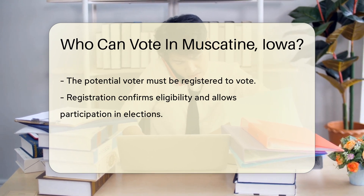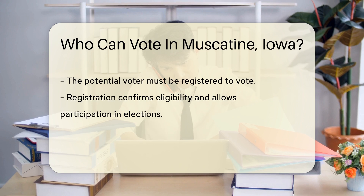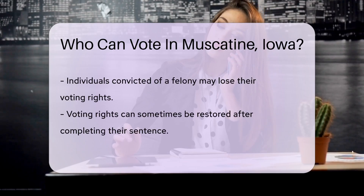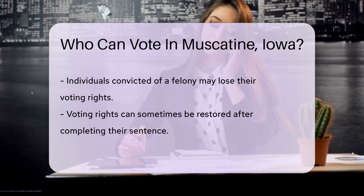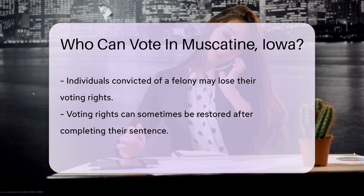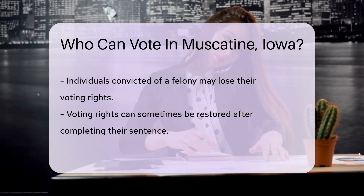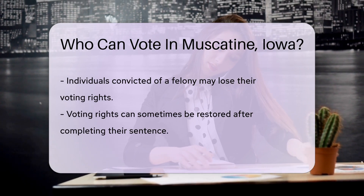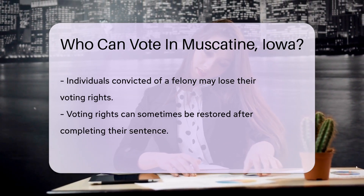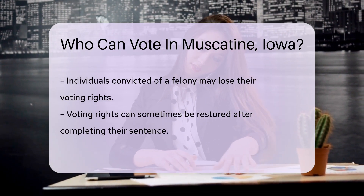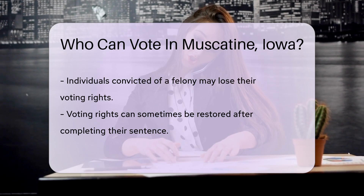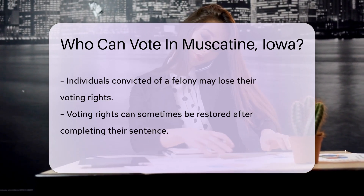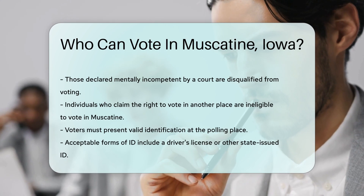It is important to note that some individuals are disqualified from voting. Those convicted of a felony may lose their voting rights; however, rights can sometimes be restored after completing their sentence. Another disqualifying factor is being declared mentally incompetent by a court — such individuals are prohibited from voting. In addition, those who claim the right to vote in another place are ineligible, ensuring that voting is done only in one jurisdiction.